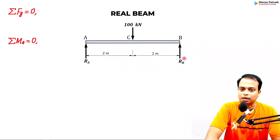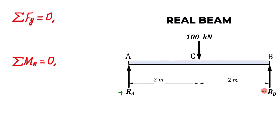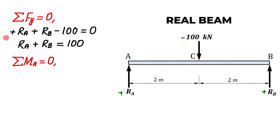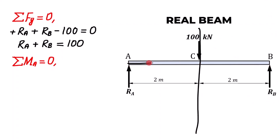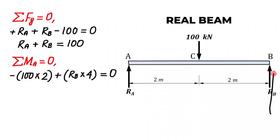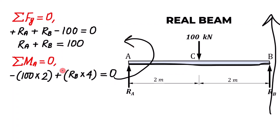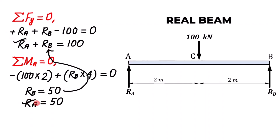Let's remove the supports and replace them with appropriate reactions. All the forces are vertical in nature, and since the beam is in equilibrium, the sum must equal zero. Taking the moment about point A, we are left with two forces: 100 kN and RB. RB is multiplied by 4, while the 100 kN load is multiplied by 2. The 100 kN creates a clockwise moment — hence negative — and RB creates an anti-clockwise moment — hence positive. Simplifying gives RB = 50 kN and therefore RA = 50 kN.